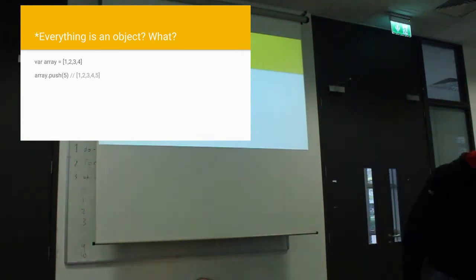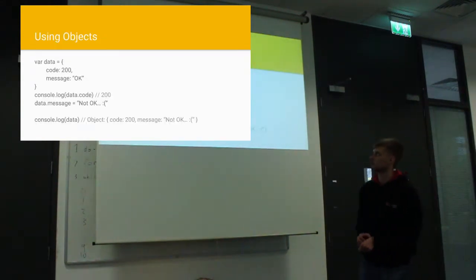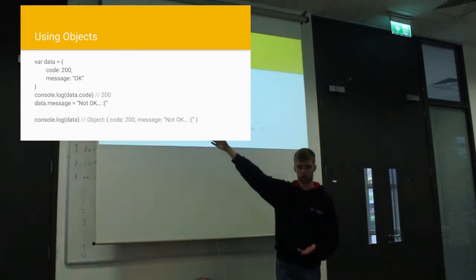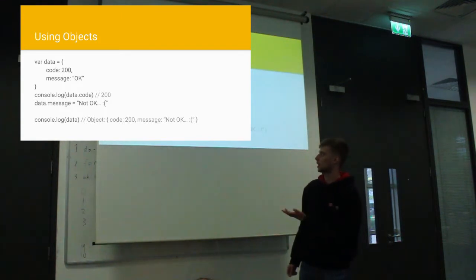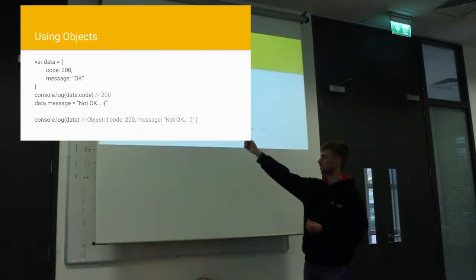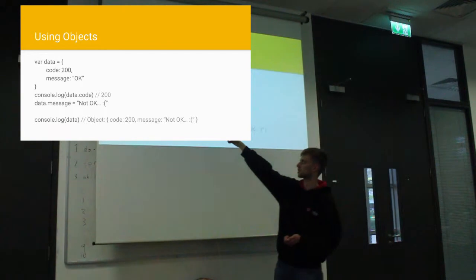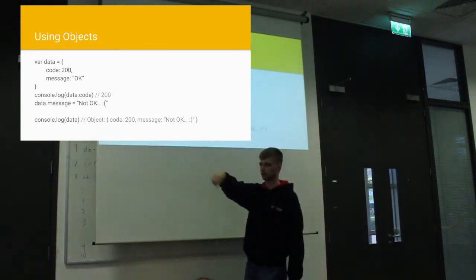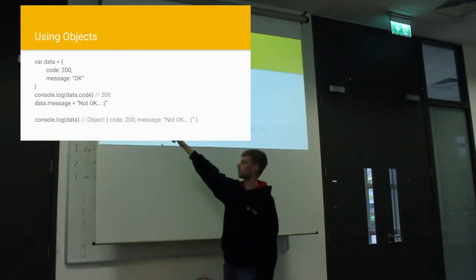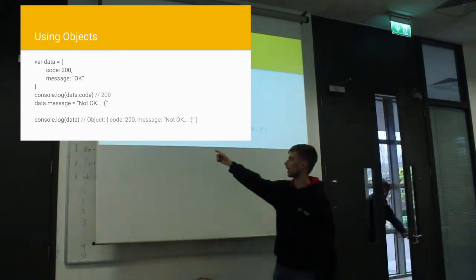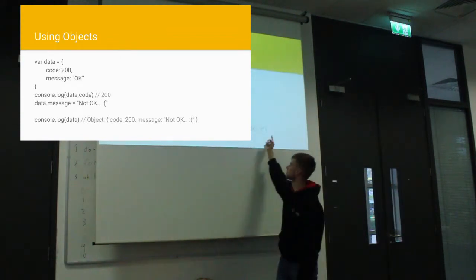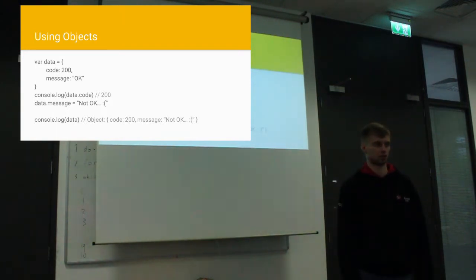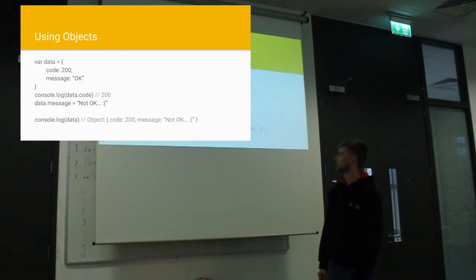You may wonder why everything is an object. Consider that you can call a method like push on an array — that's because everything can be treated as an object. To use an object: declare var data with key 'code' value 200 and key 'message' value 'okay'. You can console.log data.code to print 200. You can also set values after creation — for example, change data.message from 'okay' to 'not okay'. When you console.log data again, you'll see the updated object. Try it out in your browsers to see what it gives you.